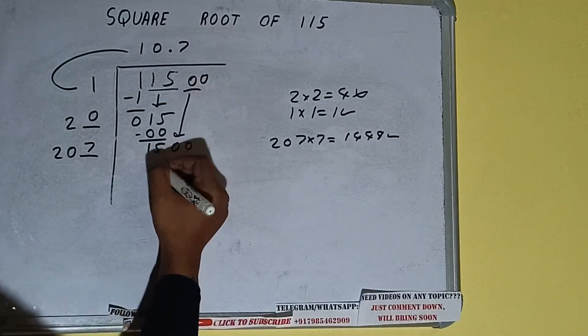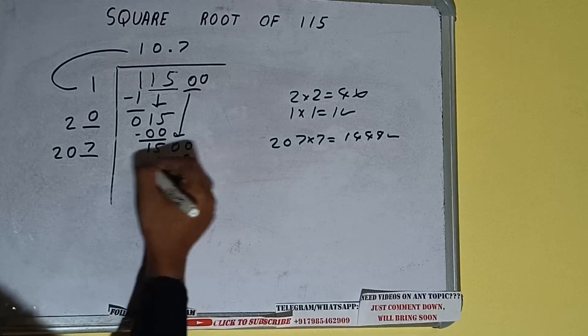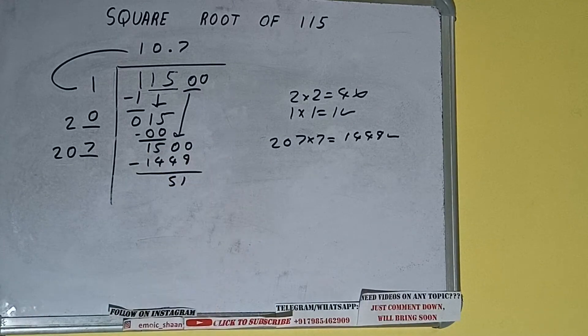And we'll be getting 1449 which is good to take. So 7 here and 7 here. 1449 subtract, 51 will be left.